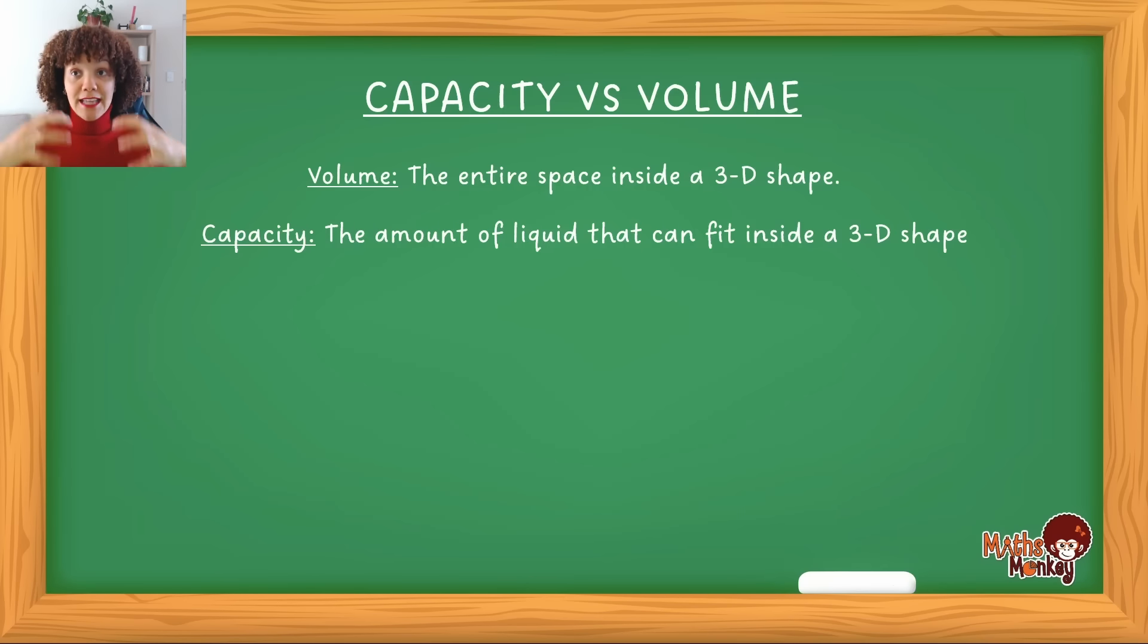So volume is the empty space, the entire space that's inside a shape. And then the capacity is how much liquid can actually fit in that space.